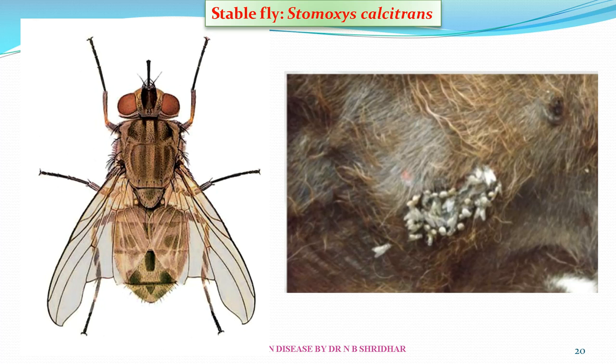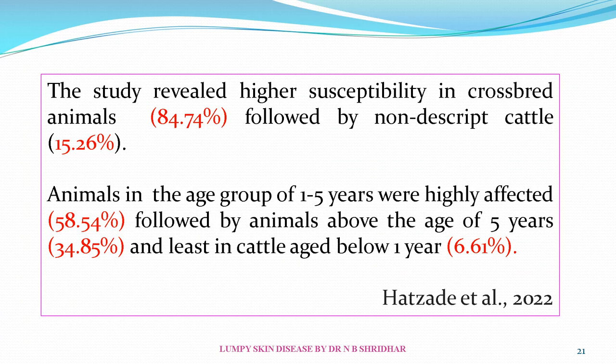The stable fly Stomoxys calcitrans carries this virus. Studies reveal higher susceptibility in crossbred animals at 84.74 percent, followed by non-descript cattle, and about 1 to 2 percent in buffaloes. Animals in the age group of 1 to 5 years are highly affected, followed by animals above 5 years at 34.85 percent. Cattle below 1 year are less affected at 6 to 6.1 percent.